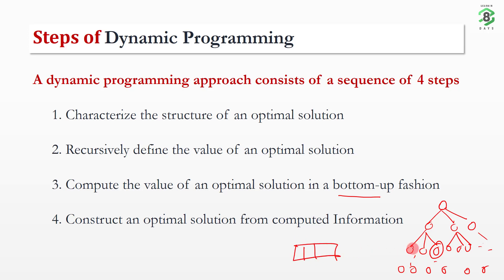Whenever we encounter the same problem again, we provide the result from the table rather than recomputing it. In this way, we solve and merge the sub-problems and ultimately find out the answer to the initial problem. This is the approach of dynamic programming: find a structure for the optimal solution, give a recursive definition of that structure, solve sub-problems once and store results, then solve the problem in a bottom-up fashion. These are the four characteristics of dynamic programming.